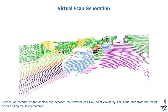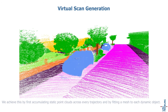We further account for the domain gap between LiDAR point clouds by simulating data from the target domain using the source domain. We achieve this by first accumulating static point clouds across every trajectory and by fitting a mesh to each dynamic object.